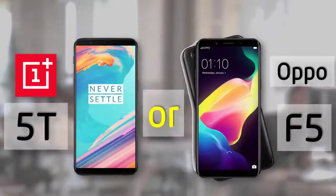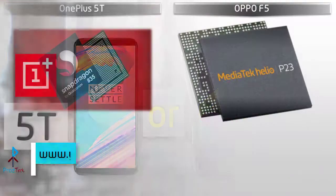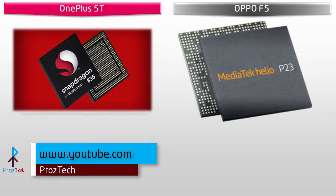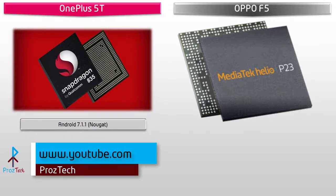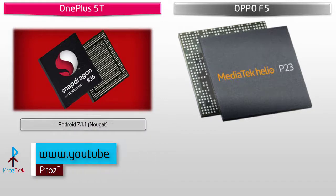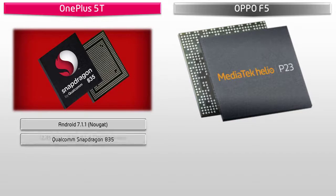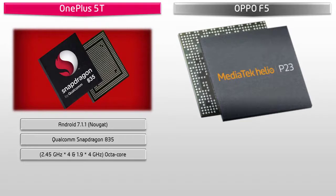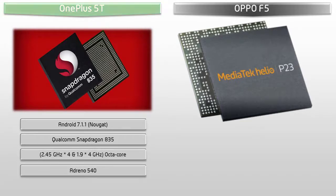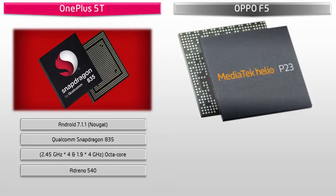Starting with the OnePlus 5T, it works on Android 7.1.1 Nougat with OxygenOS, and is powered by a 2.45 GHz octa-core Qualcomm Snapdragon 835 with Adreno 540 GPU. OnePlus says that OxygenOS is their operating system built on Android — it's smooth, minimalistic, and refined.